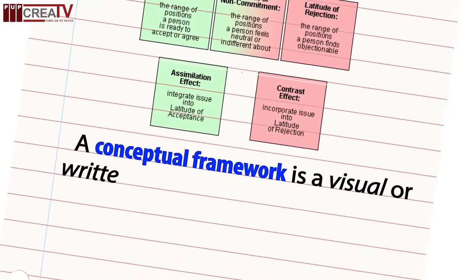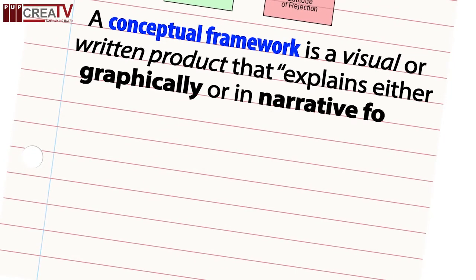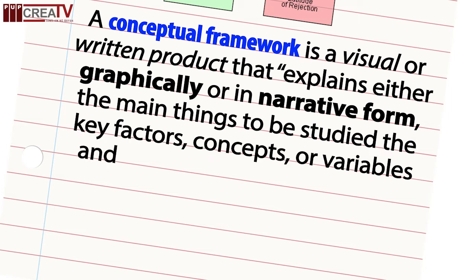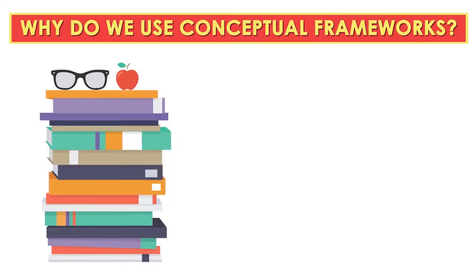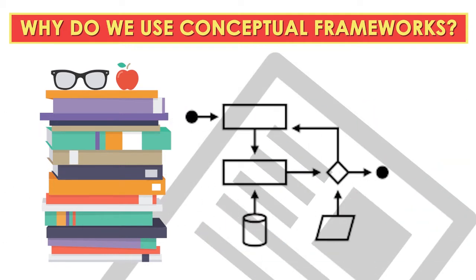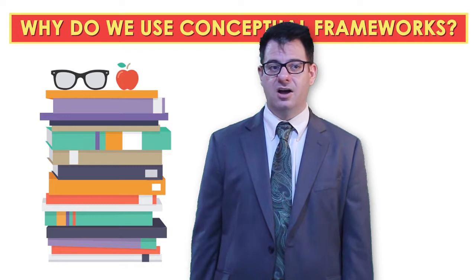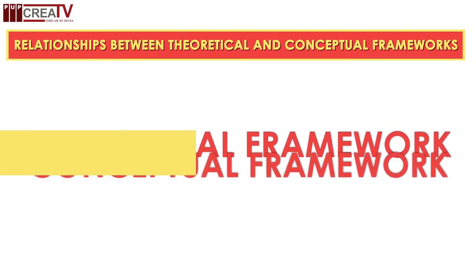A conceptual framework is a visual or written product that explains either graphically or in written form the main things to be studied — key factors, concepts, and variables — and the relationships among them. This definition is by Miles and Huberman. Conceptual frameworks inform us and the reader what we intend to study. It guides our literature review, provides a tentative theory of the phenomenon under study, and guides our research design by giving an educated or informed hunch of what's going on. Theoretical and conceptual frameworks are, of course, strongly related.